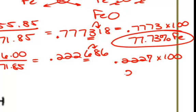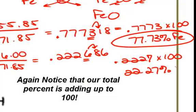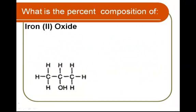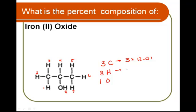For oxygen, we take our 16.00 divided by 71.85 and we get .222686. We still have four significant figures, so we're rounding to the six. The eight tells the six to become a seven, so we have .2227. Multiply this by 100 and we get 22.27% because of the oxygen. If we consider our structural formula, we have three atoms of carbon, eight hydrogens, and one oxygen. So we take 3 times 12.01, 8 times 1.01 and 1 times 16.00, and we get a total mass of 60.11.